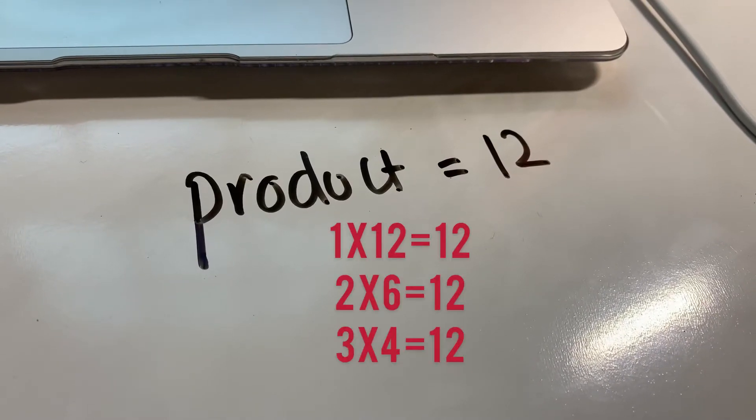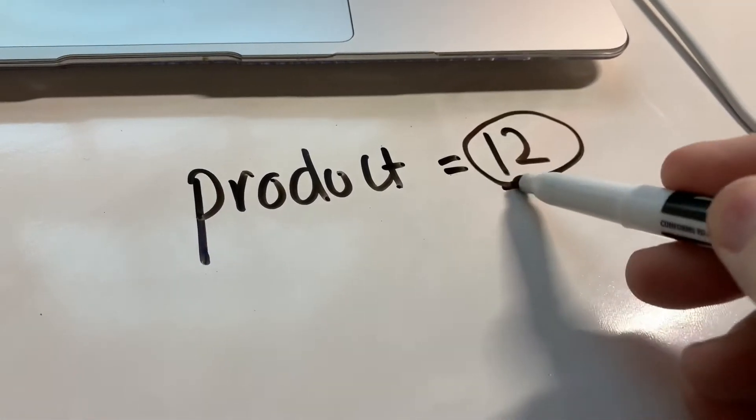A product is when you multiply two numbers together and you get the answer. The answer is called the product.